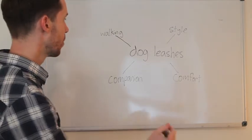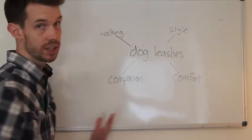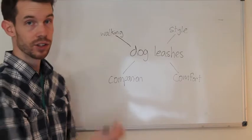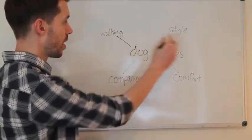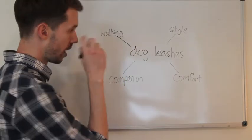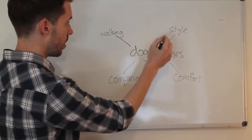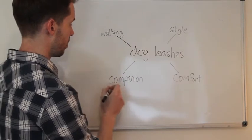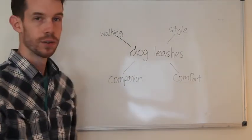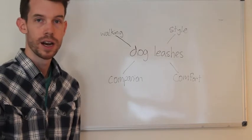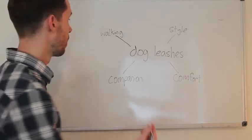The way you want to start your mind map is basically word association. Break it off into categories. I started off with walking, style, companion, and comfort — those are just the first things that came to mind. And then you want to just start working off of that.